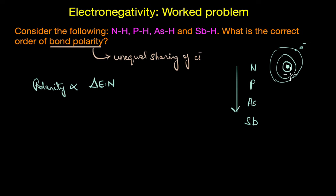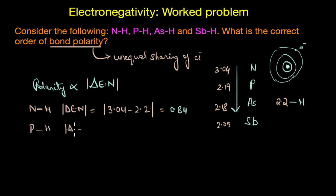If you look at the electronegativity values of these elements, they would be 3.04 for nitrogen, 2.19 for phosphorus, 2.18 for arsenic, and 2.05 for antimony. As you can see, the electronegativity value indeed decreases down the group. The electronegativity value for hydrogen is 2.2. To figure out which of these bonds have maximum polarity or the correct order of bond polarity, let's calculate the electronegativity difference between the atoms of each of these bonds. For N-H, delta EN is 3.04 minus 2.2 for hydrogen, that would be 0.84. Similarly phosphorus, delta EN would be 2.19 minus 2.2 which is 0.01.